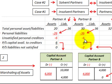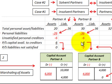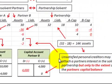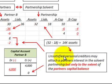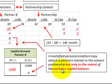For Partner B, it was the opposite — they had unsatisfied personal creditors of $6,000 but only $4,000 in their capital account. So only $4,000 could be applied from partnership capital to creditors, resulting in $2,000 of partnership liabilities not satisfied. This is based on the marshalling of assets doctrine: unsatisfied personal creditors may attach a partner's interest in the solvent partnership, but only to the extent of the partner's capital balance.